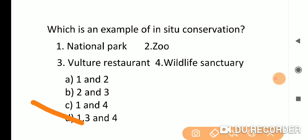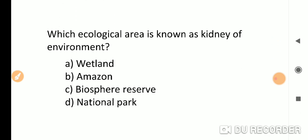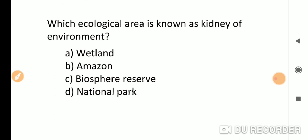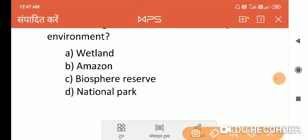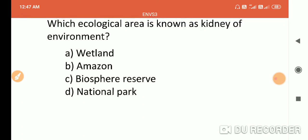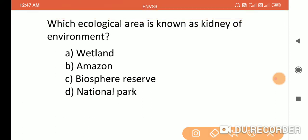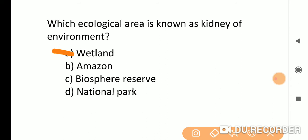Which area is known as kidney of environment or kidney of earth? The correct answer is option A: wetlands are called kidney of environment, and Amazon is the lungs of earth.